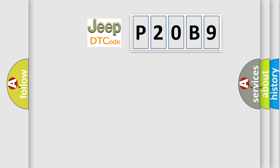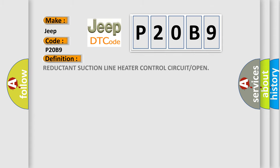The number itself does not make sense to us if we cannot assign information about what it actually expresses. So, what does the diagnostic trouble code P20B9 interpret specifically for Jeep car manufacturers? The basic definition is: Reductant Suction Line Heater Control Circuit or Open.